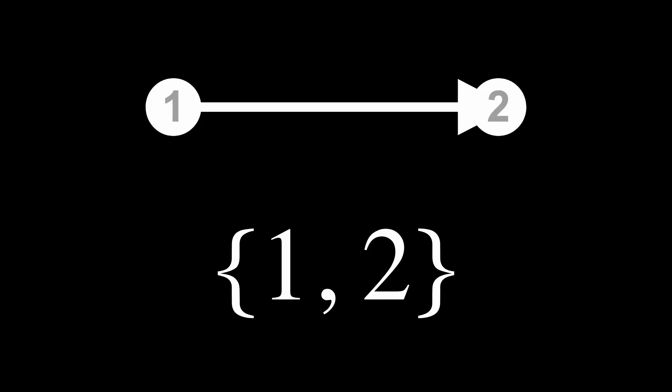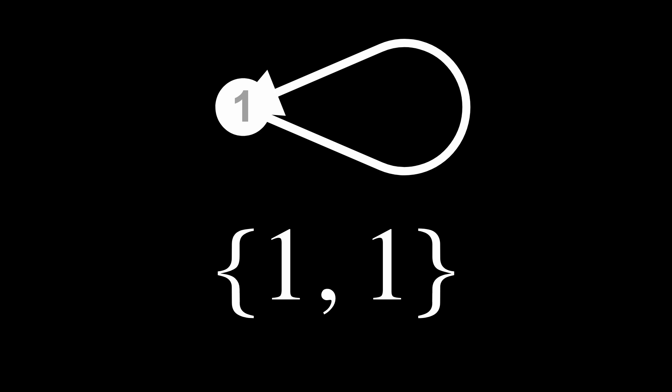But there's actually a simpler loop we can construct. If we can have a binary edge {1, 2} from node 1 to node 2, and a binary edge {2, 3} from node 2 to node 3, then it doesn't seem unreasonable to imagine that we can have any two numbers in the curly brackets, representing a binary edge between any nodes. So how about a binary edge {1, 1}? There's nothing in our numerical representation to prevent such a binary edge from node 1 to node 1. We'll just need to bend an arrow back on itself, so that it loops from node 1 back to node 1. A binary edge that loops from a node back to the same node is called a self-loop.